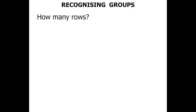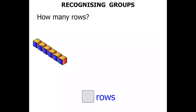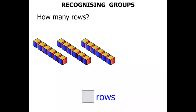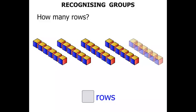How many rows? Let's write our answer down here. We've got one row of blocks. Two rows of blocks. Three rows of blocks. Four rows of blocks. Five rows of blocks. We've got five rows.